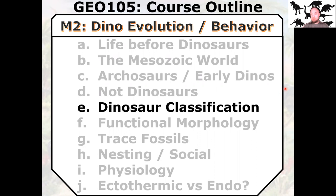Hello, welcome back to Dinosaurs. Today we're going to talk about dinosaurs. We've been spending a lot of time talking about the other stuff that was around during the Mesozoic, or just before the Mesozoic in the Paleozoic, on the way to the age of the dinosaurs. We're now here — we're going to start talking about dinosaurs every day for the rest of the course. So I hope you're ready. We're going to start with dinosaur classification, the dino family tree.